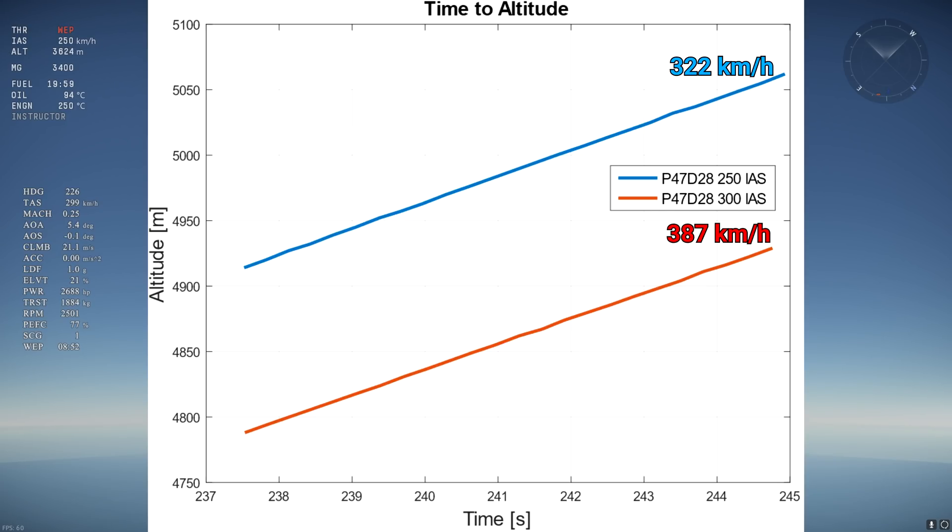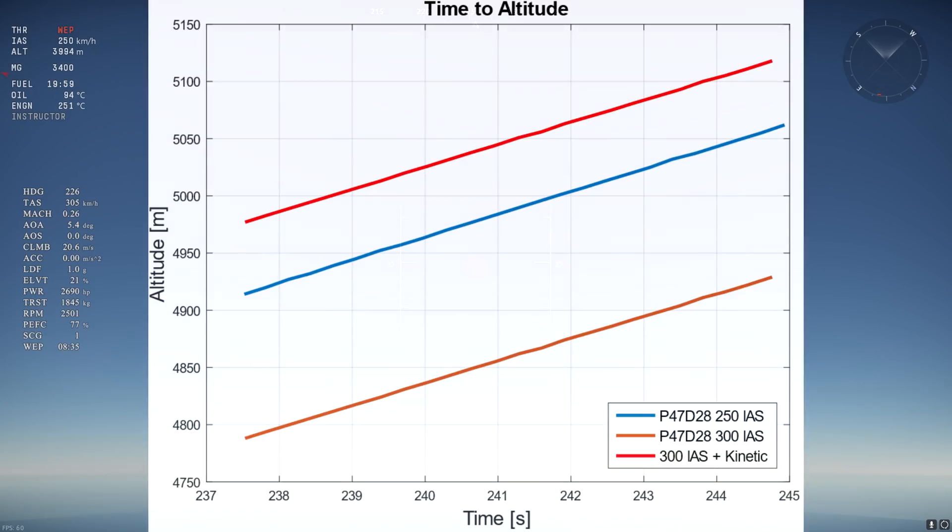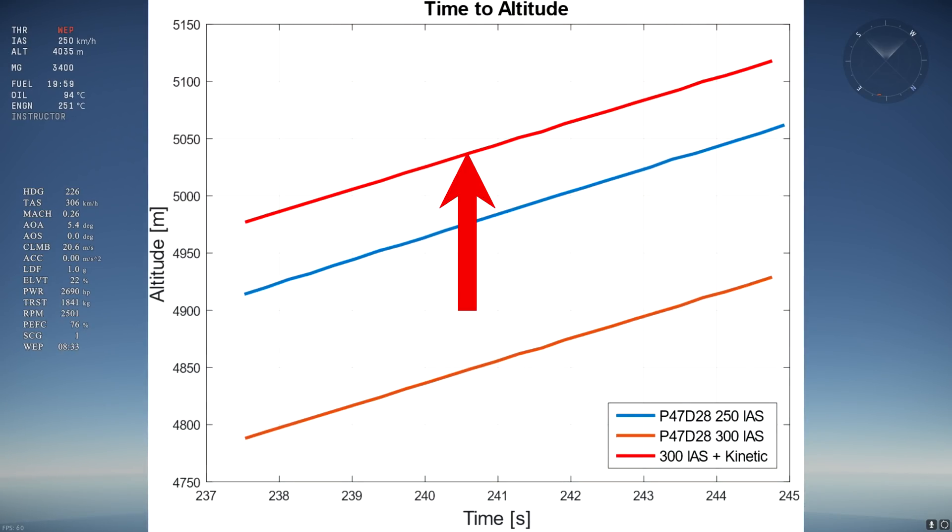Let's convert the TAS into equivalent meters of potential energy and see where things truly stand. 322 kmph is converted into 408 meters and 387 kmph is converted into 589 meters. The difference gives the 300 IES climb an additional 181 meters of altitude, overcoming the initial 126 meter lead and becoming the more efficient climb speed when compared to the 250 IES climb.